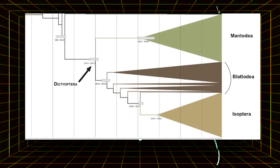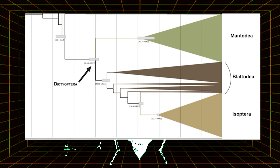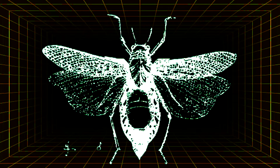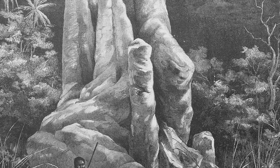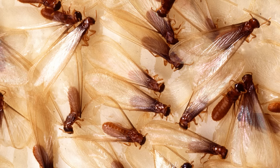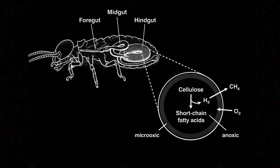Termites evolved from cockroaches. But unlike cockroaches, termites are very specialized in diet, and they don't like to move away from home. Only the reproductives will leave home to start up colonies on their own. However, similarly to cockroaches, the gut bacteria of these insects is far more capable and complex than that of your average bug.